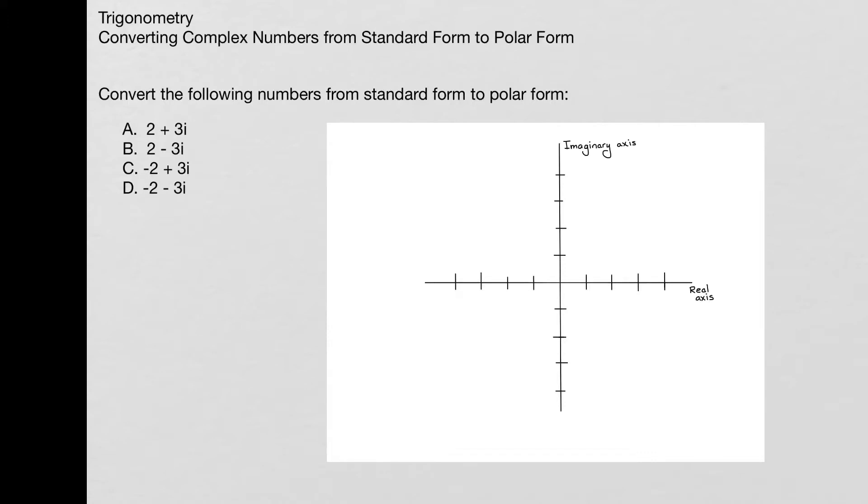First thing I'm going to do is graph each of these. For A, we have 2 plus 3i, and that's 2 on the real axis and 3 on the imaginary axis, so that's about there. 2 plus 3i, so that's A.